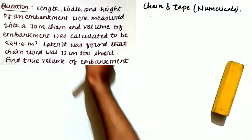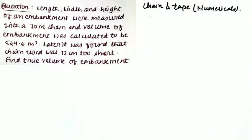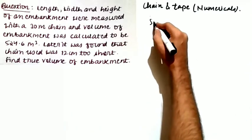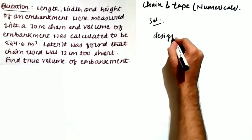Moving to the next question. The length, width, and height of an embankment were measured with a 30 meter chain, and the volume of the embankment was calculated as 524.6 meter cube. Later it was found that the chain used was 12 centimeters too short. Find the true volume of the embankment. You have to apply the standardization correction, but here it is for volume.